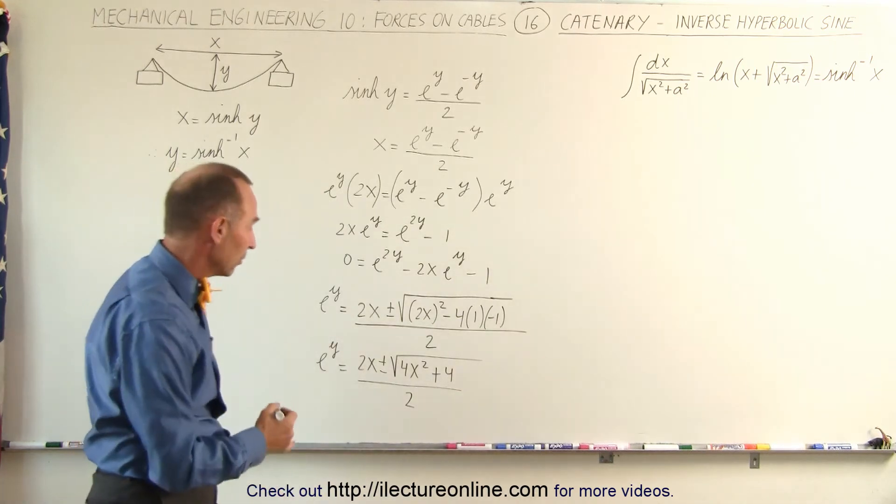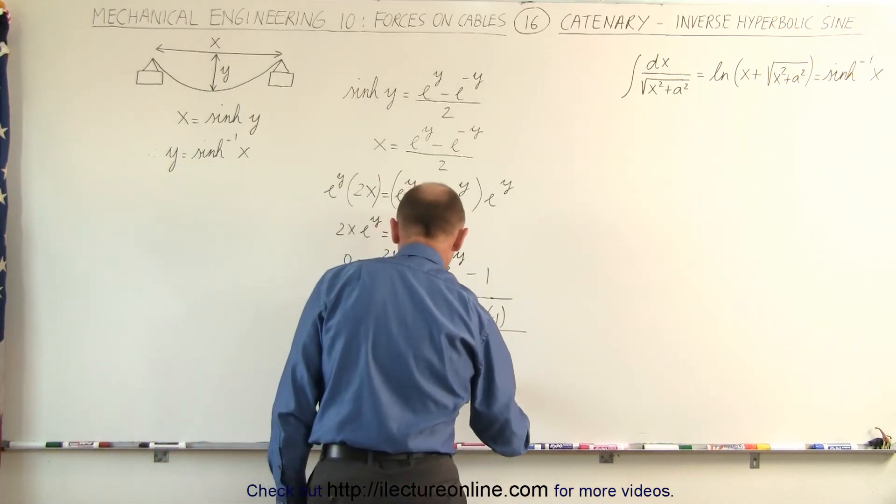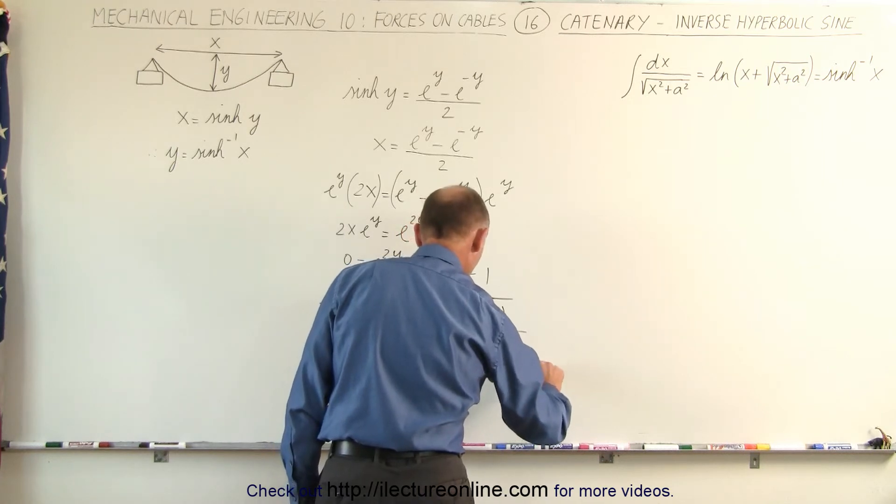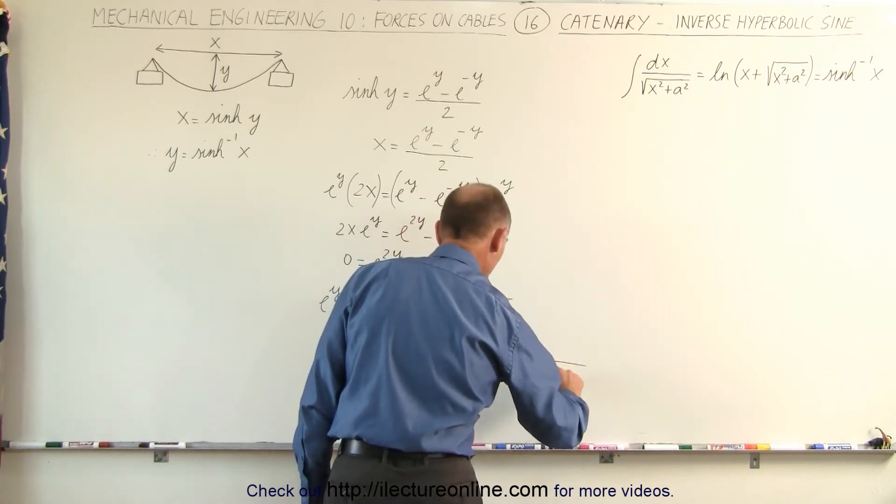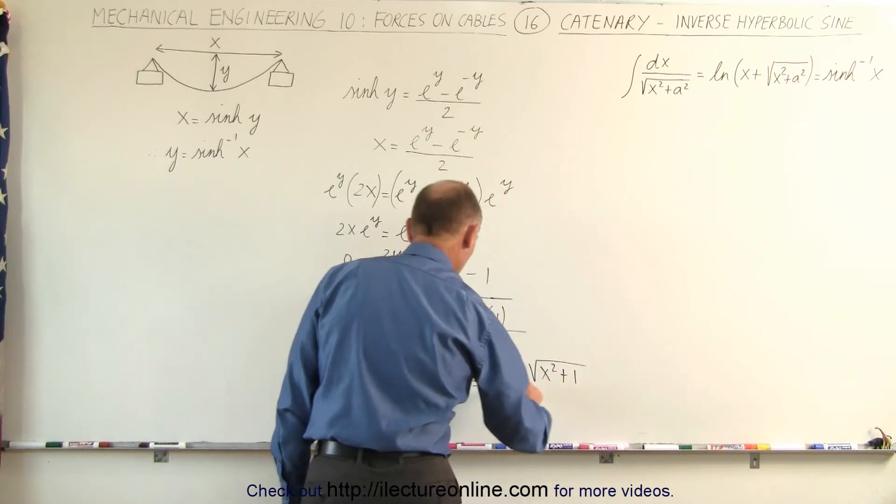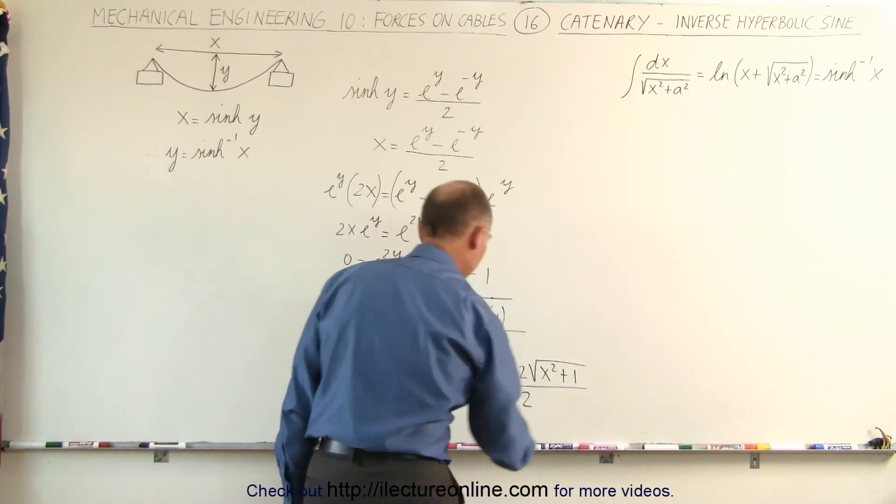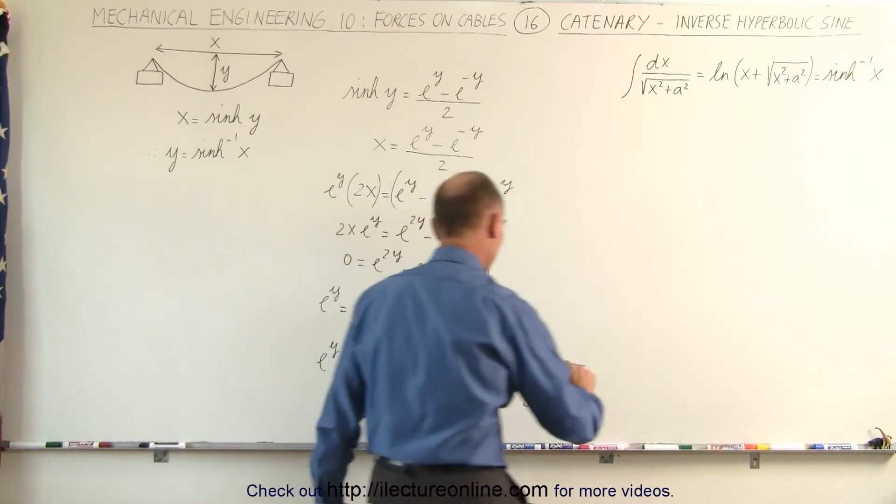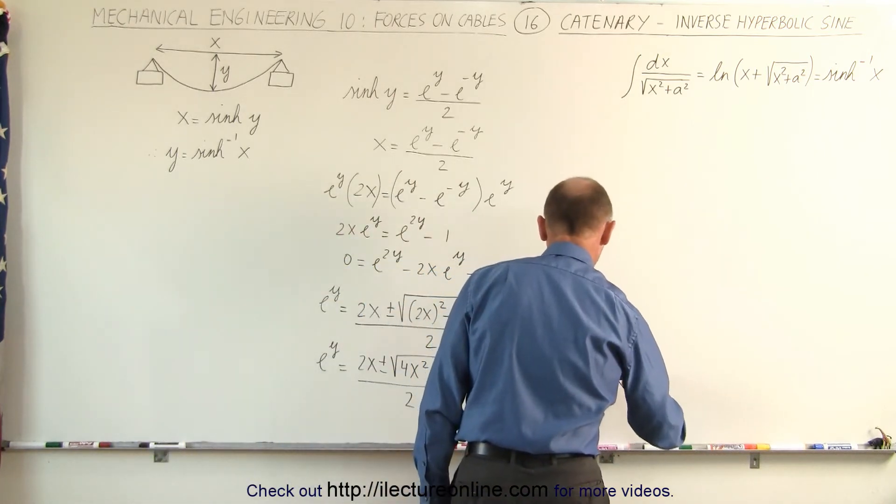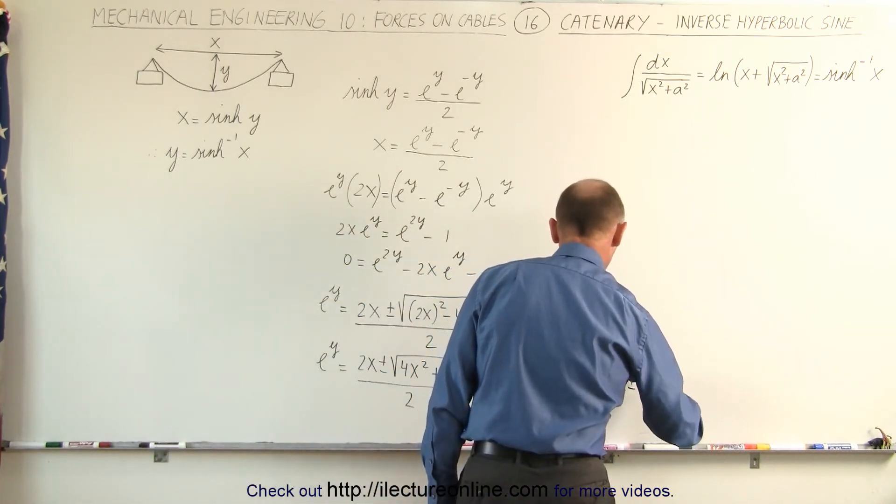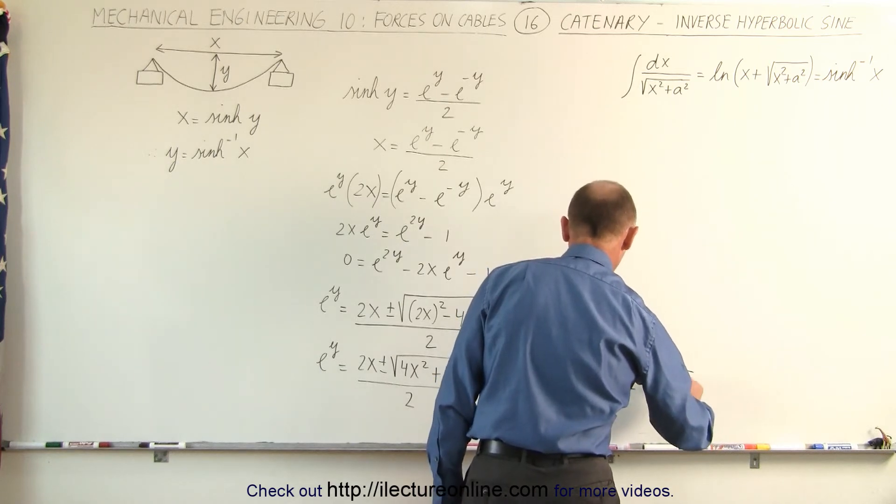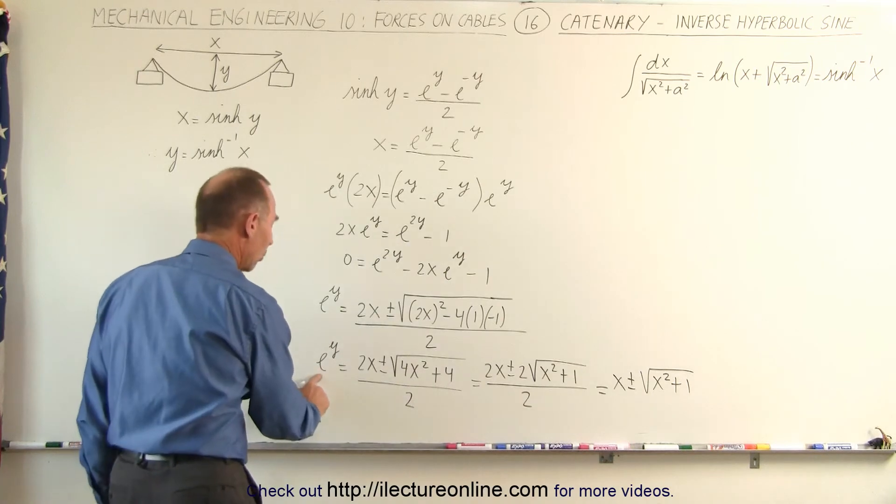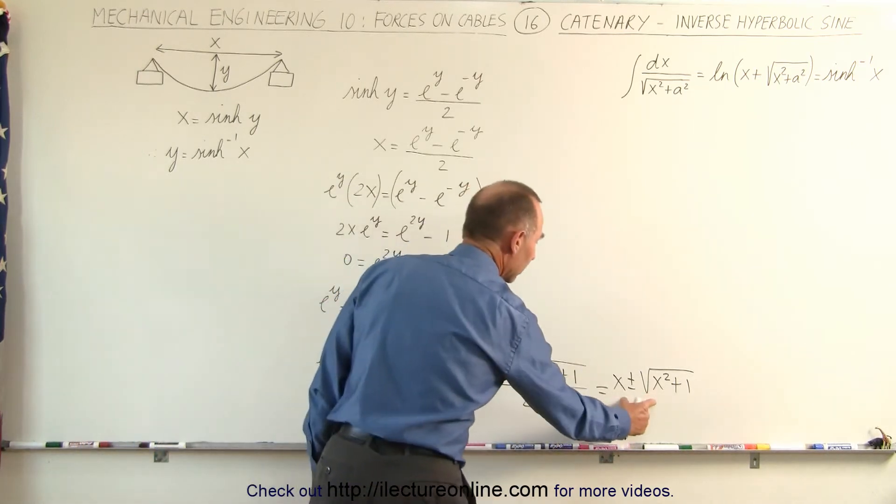Notice we can now factor out a 2 from the radical. This is equal to 2x plus or minus, that would be 2 times the square root of x squared plus 1, all divided by 2. And of course, the 2s in the numerator cancel out with 2 in the denominator. So this can be written as x plus or minus the square root of x squared plus 1. In other words, we can say that e to the y is equal to this quantity right here.